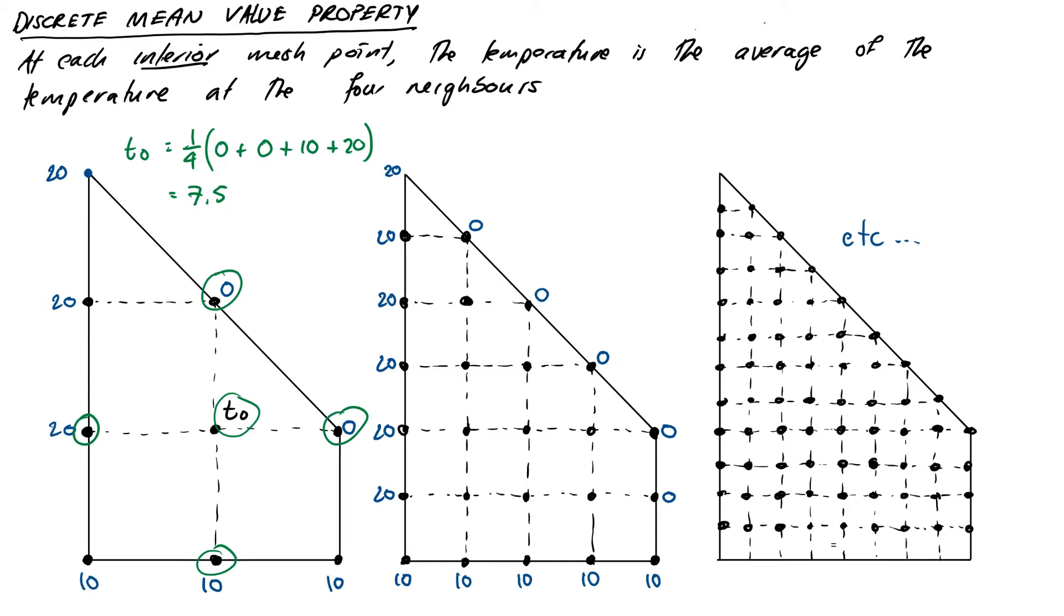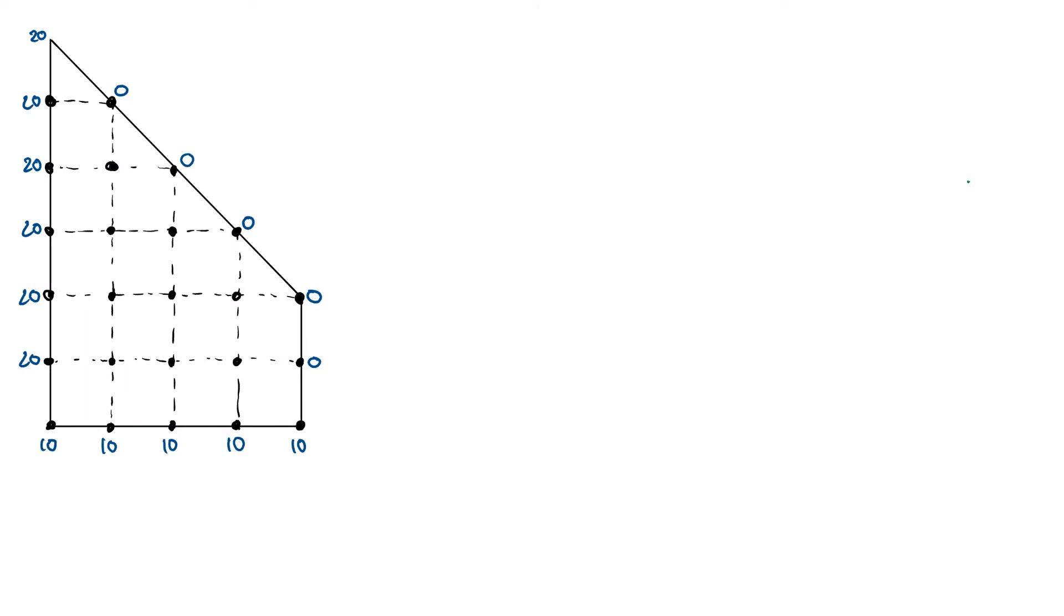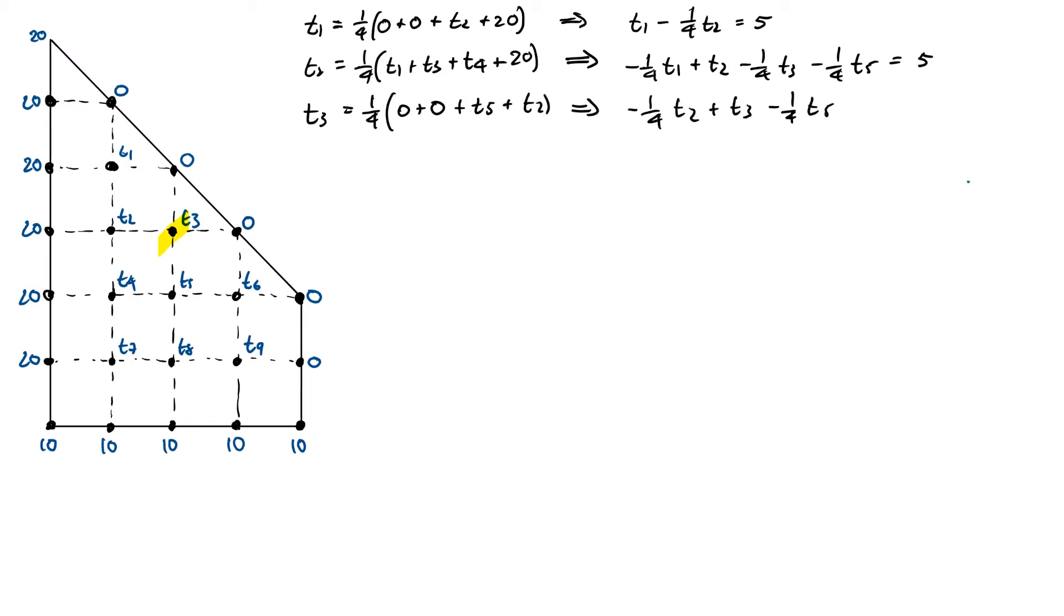So we'll need to write down this average value property for every single one. So you can see at the first one, we have T1 is going to be one quarter. I'm just going to go in the north, east, south, west direction each time to hopefully make it clear. I'm going to have a quarter of zero plus zero plus T2 plus 20. That will be T1. Then T2 will be a quarter of T1 plus T3 plus T4 plus 20. Then T3 will be a quarter of zero plus zero plus T5 plus T2. Then T4 will be a quarter of T2 plus T5 plus T7 plus 20. T5 will be a quarter of T3 plus T6 plus T8 plus T4. We're getting there.